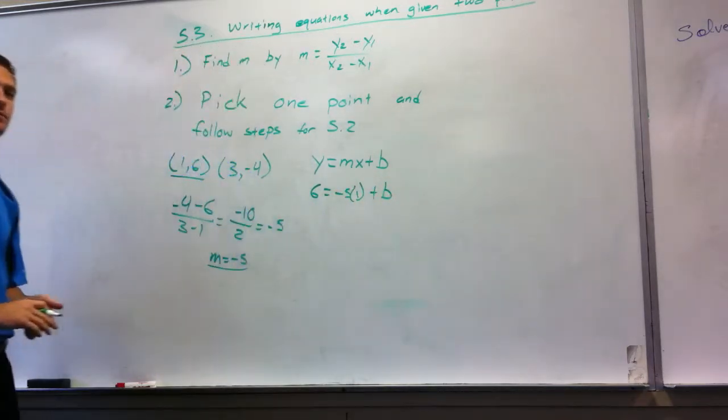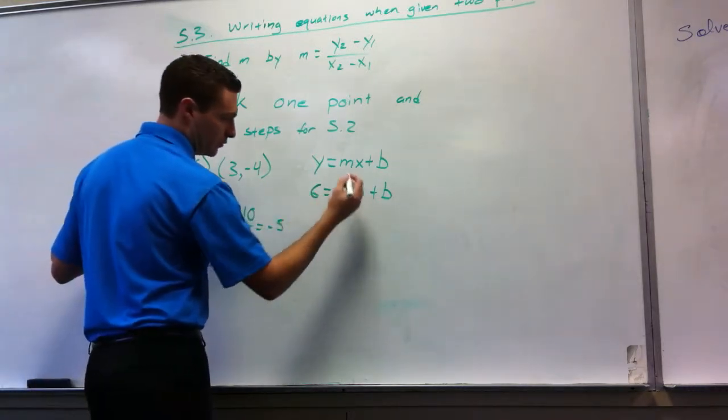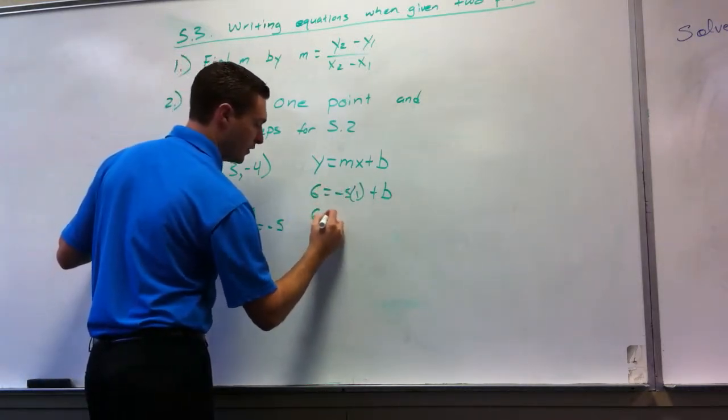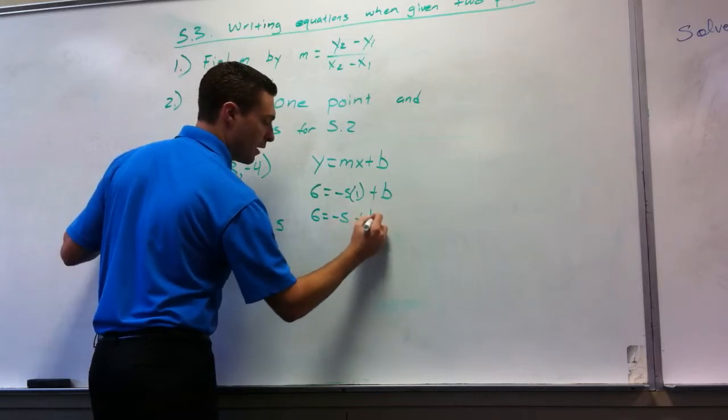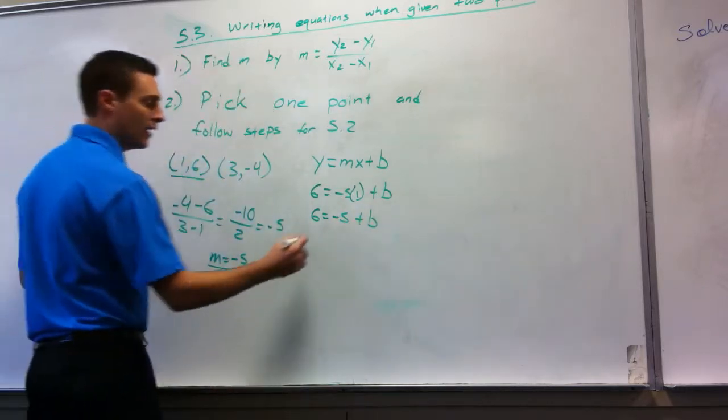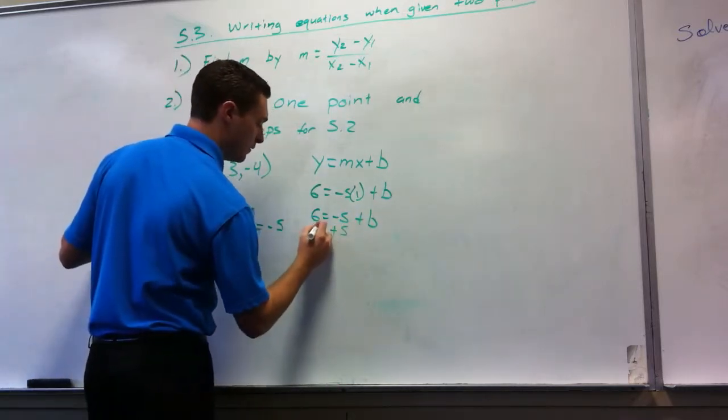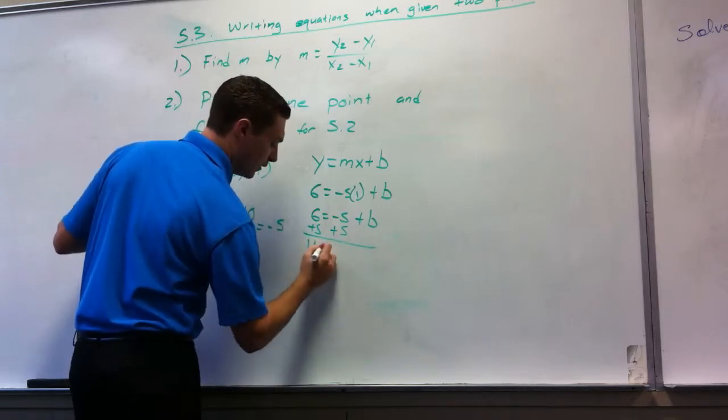Then I'm going to solve for b. Negative 5 times 1 is negative 5. So I have 6 equals negative 5 plus b. How would I solve for b? Add 5 to both sides. 11 equals b.